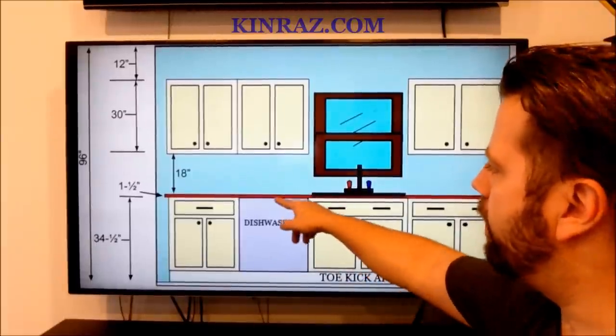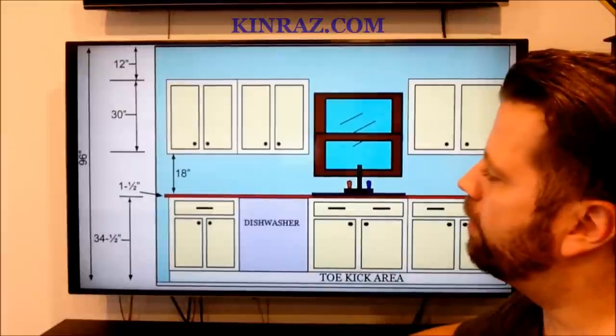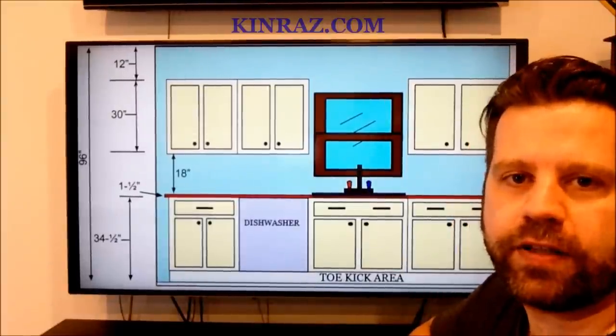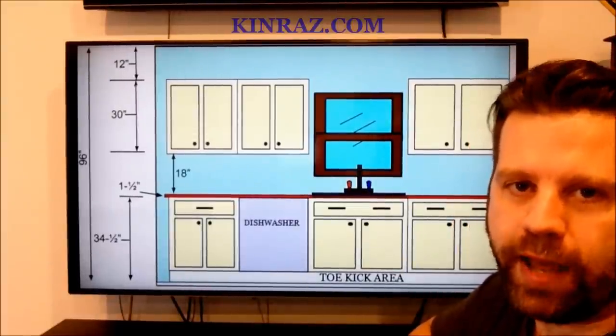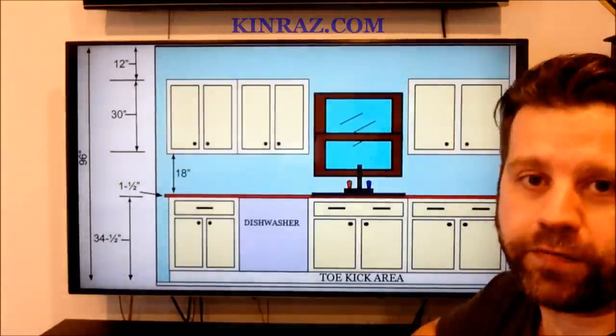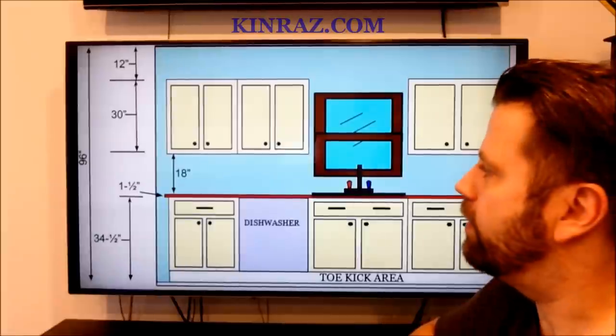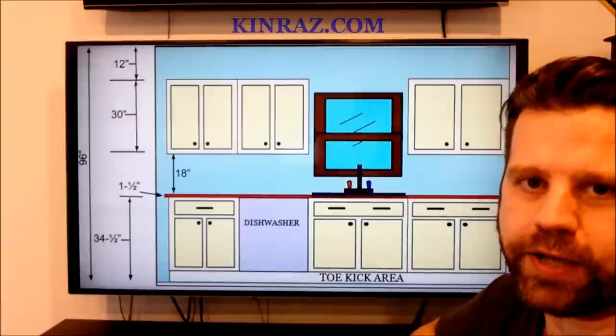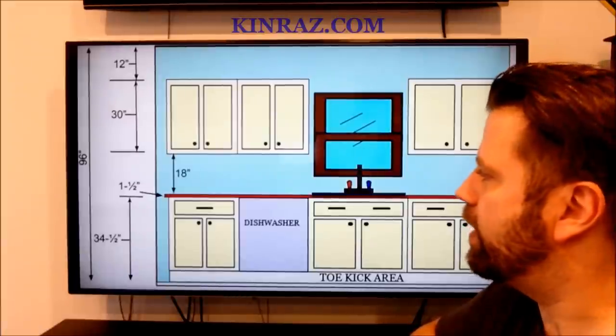Then up above that you have your countertop. Now most of the time your countertops will be one and a half inches thick. That includes your laminate tops, your solid surface tops, and if you did go with a hardwood maple butcher block countertop, that would also be one and a half inches thick.